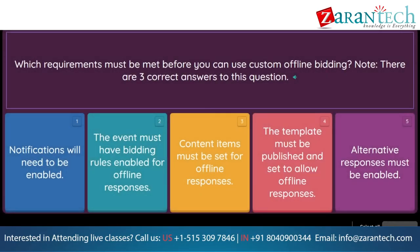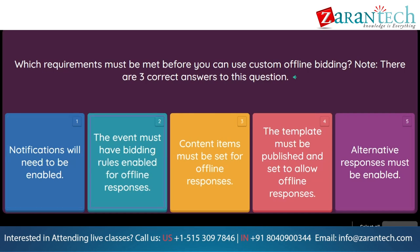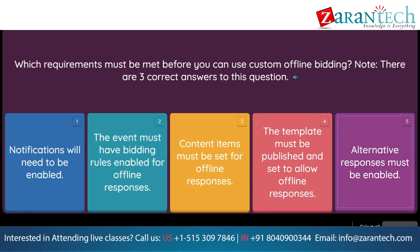Question: Which requirements must be met before you can use custom offline bidding? Note, there are three correct answers to this question. Option 1: notifications will need to be enabled. Option 2: the event must have bidding rules enabled for offline responses. Option 3: content items must be set for offline responses. Option 4: the template must be published and set to allow offline responses. Option 5: alternative responses must be enabled.